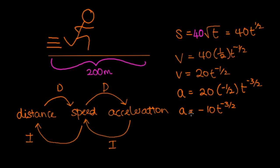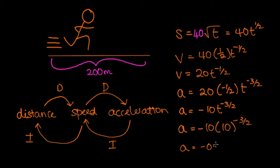Looking for his acceleration 10 seconds into the race, we plug in t equals 10. So a equals minus 10 times 10 to the minus 3 over 2, which comes out as minus 0.32 to 2 significant figures. The minus sign implies that 10 seconds into the race he is decelerating at a rate of 0.32 meters per second squared.